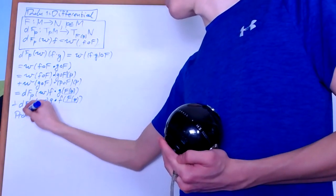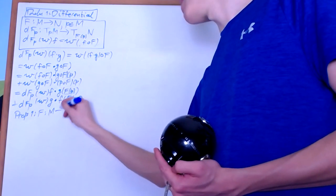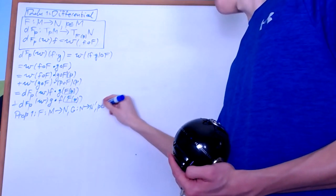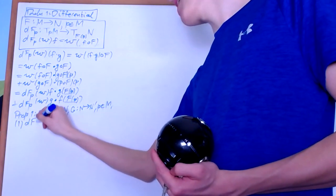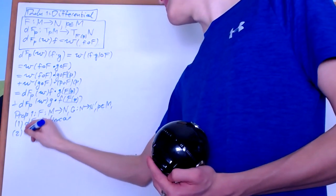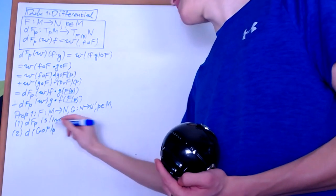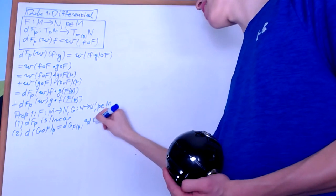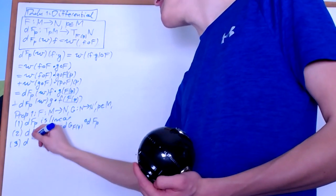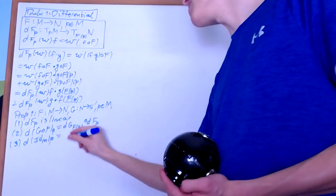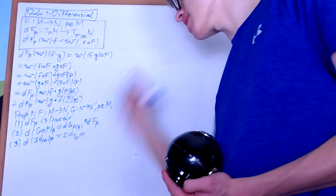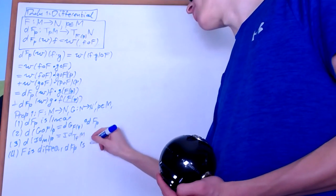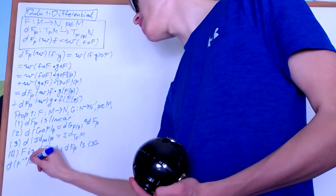Now that we know this is well-defined, let's prove some properties. Let F be a smooth map from M to N and G a smooth map from N to N', with P a point in M. Property 1: dF_P is linear. Property 2: D(G∘F) at P equals D(G) at F(P) composed with D(F) at P. Property 3: D(id_M) at P equals the identity on T_P M. Property 4: if F is a diffeomorphism, then dF_P is an isomorphism with inverse D(F⁻¹) at F(P).